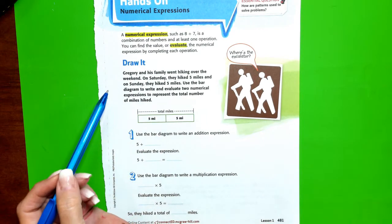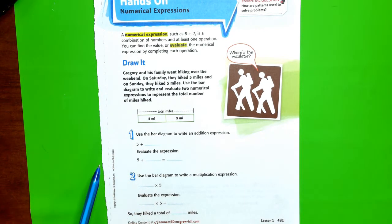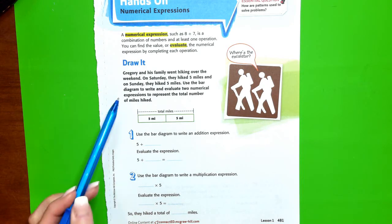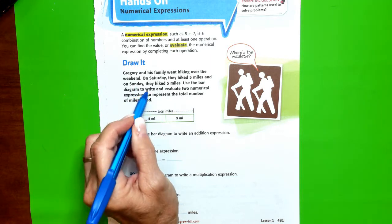Gregory and his family went hiking over the weekend. On Saturday they hiked 5 miles and on Sunday they hiked 5 miles. Use the bar diagram to write and evaluate.